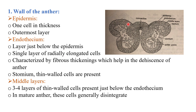The outer single layer of the anther wall is known as the epidermis; it is one cell in thickness. The second layer, next to the epidermis, is known as the endothecium. This is a single layer of radially elongated cells, characterized by fibrous thickenings which help in the dehiscence of the anther.